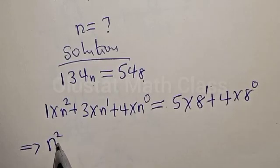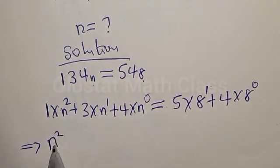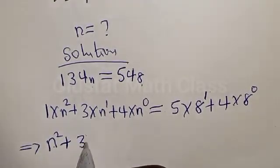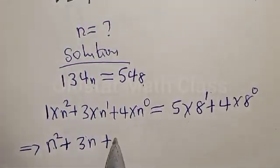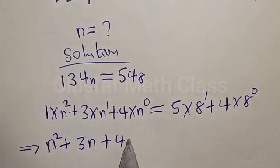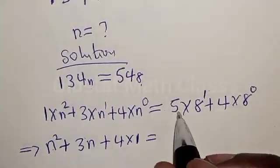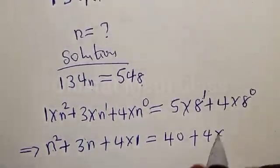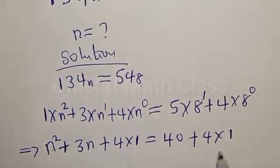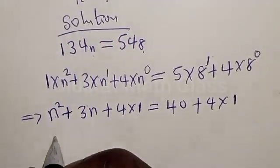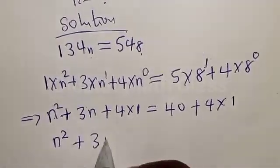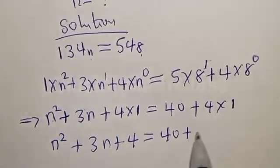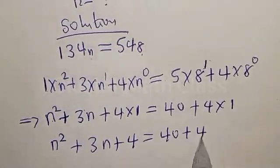We have 1 times n squared — that is n squared — plus 3 times n raised to power 1, which is 3n, plus 4 times n raised to power 0, which is 1. It is equal to 8 raised to power 1 is 8 times 5, that is 40, plus 4 multiplied by 8 raised to power 0, which is 1. So we have n squared plus 3n plus 4 times 1, which is 4, equal to 40 plus 4 times 1.